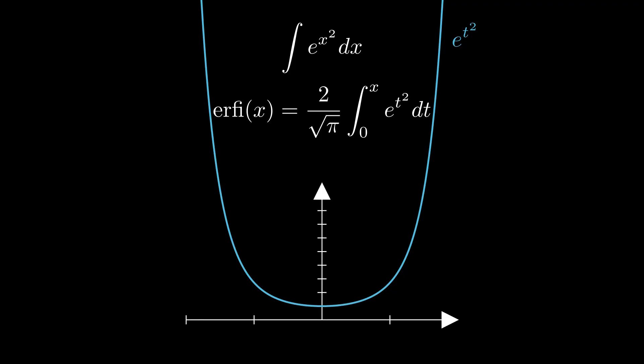This function shows up a lot in wave propagation and certain solutions to the heat equation, and also in quantum mechanics when we're talking about inverted Gaussian terms. It's a reminder that changing one sign in the exponent can change a lot about how a function behaves and how we're going to take the integral.